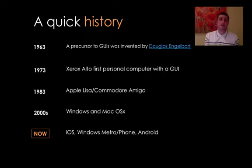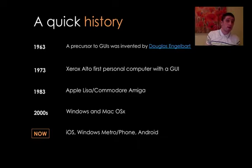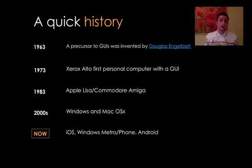In the 2000s, we had Windows and the Mac OS X evolution. These days we have iOS, Windows Metro, Phone, and any form of Android out there — Honeycomb, etc. All of these are a genuine evolution of GUI.